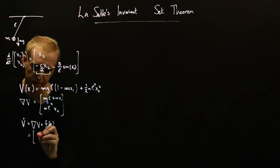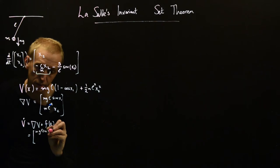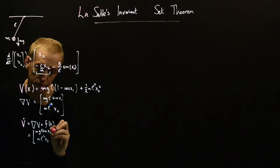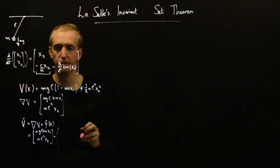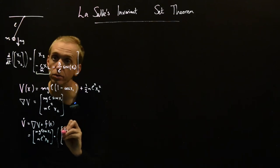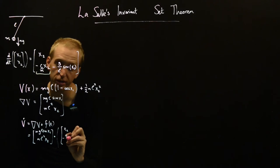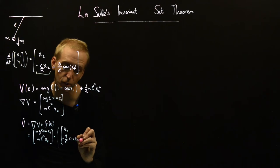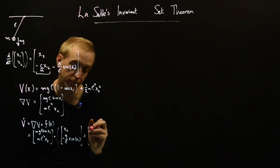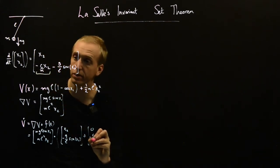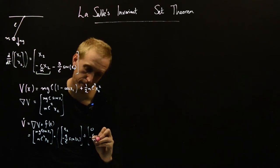And so what do we get this time? Well, everything is almost exactly the same. So we have the same gradient of V: MgL sin x1 and M L squared x2. But we're dot producting this with essentially the same thing, so with what we had before, which was x2 and minus G over L sin x1, plus our new damping piece, which is minus C over M x2.